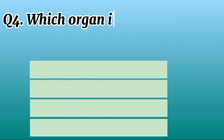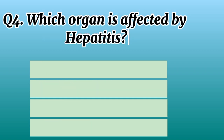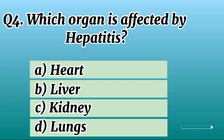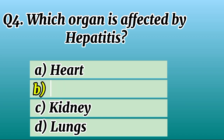Question 4. Which organ is affected by hepatitis? Correct option B: Liver.